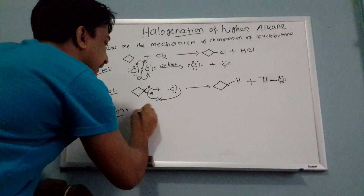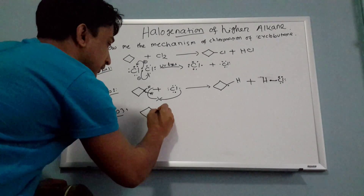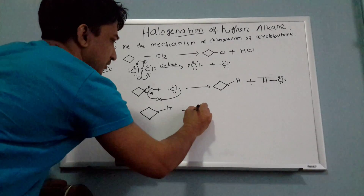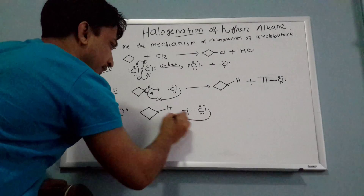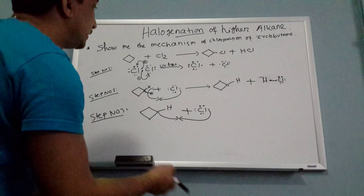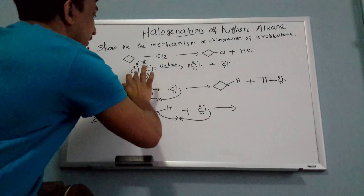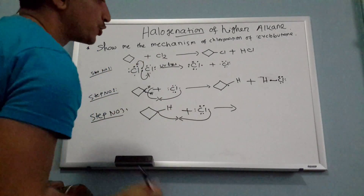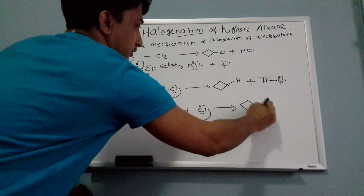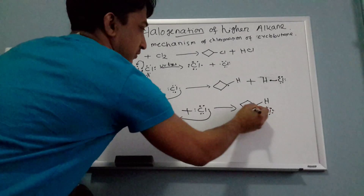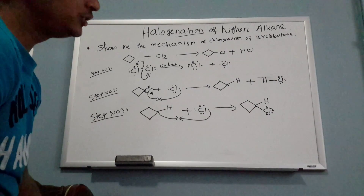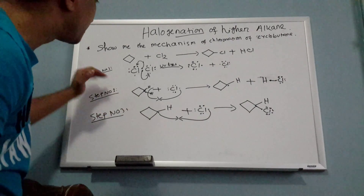Step number three: you have a free alkane radical and one more halogen radical. They attack each other — this one comes a little bit, this one comes a little bit. You have to show both arrows. This step is called termination.